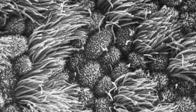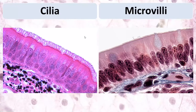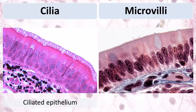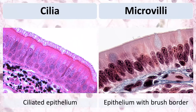In a scanning electron micrograph of the epithelium, we can see the apical surface of the epithelial cells — some of them have microvilli and some have cilia. Epithelium with cilia on the apical surface is called ciliated epithelium. Epithelium with microvilli is called epithelium with brush border — those microvilli on the apical surface of epithelial cells form the brush border. Some epithelium has no cilia and no microvilli, having a completely smooth surface.